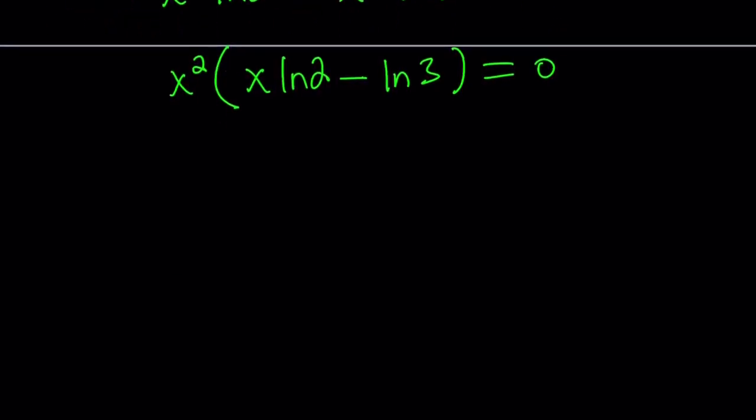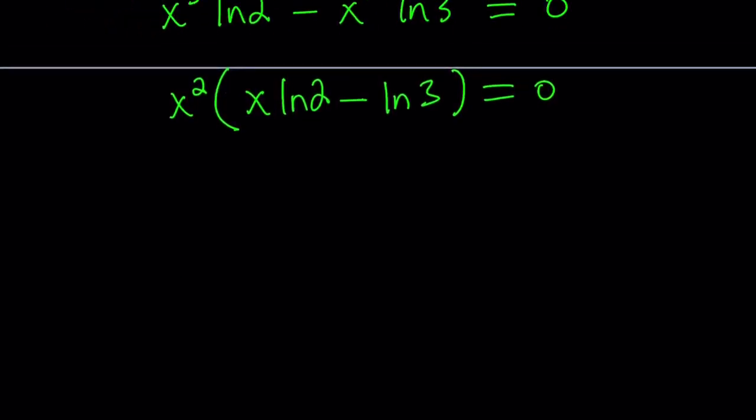Let's solve each case. x squared equals 0 implies x equals 0. That is a valid solution. If you plug it in, you're going to see that.